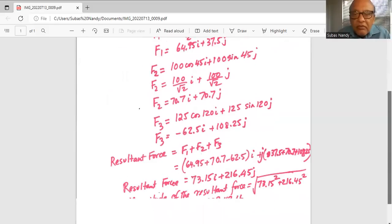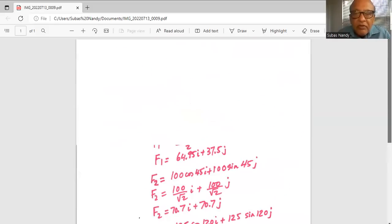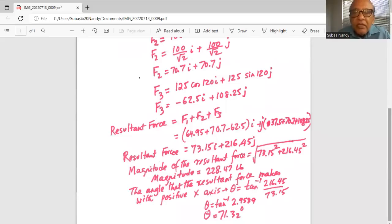Now we are going to find the resultant force by adding F1 plus F2 plus F3 and we will get 64.95 plus 70.7 minus 62.5 in parenthesis. That's the coefficient for i and for j it is